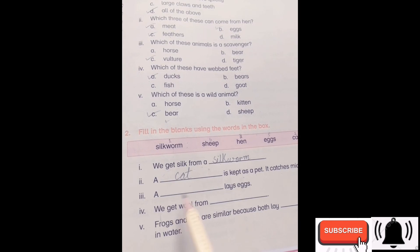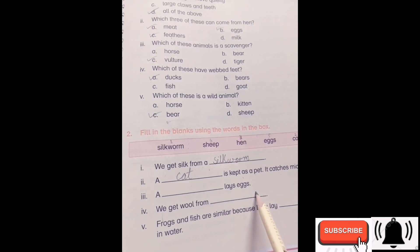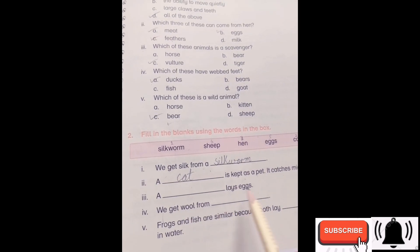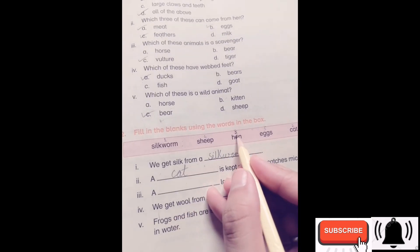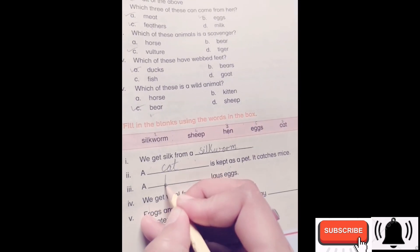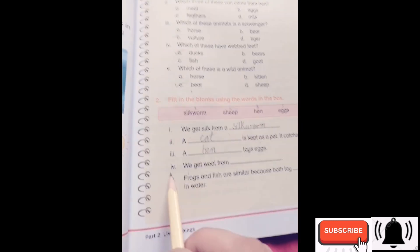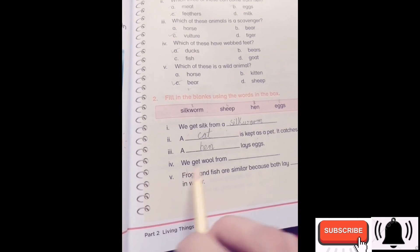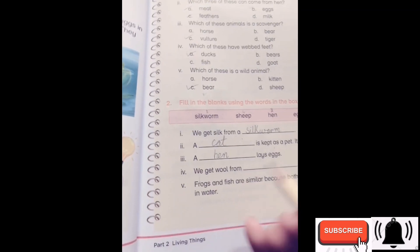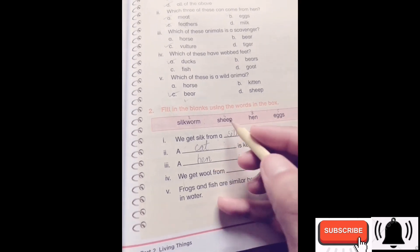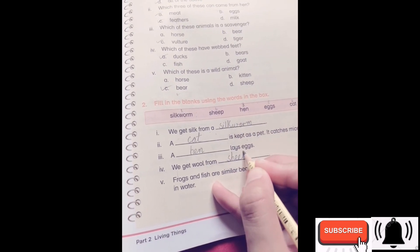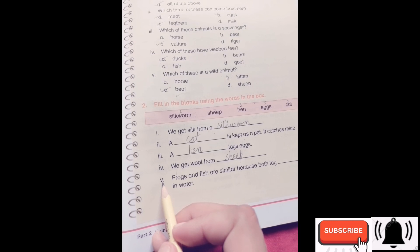Number three, a dash lays eggs. Who lays eggs? The correct answer is hen. Number four, we get wool from... where do we get wool from? Sheep.